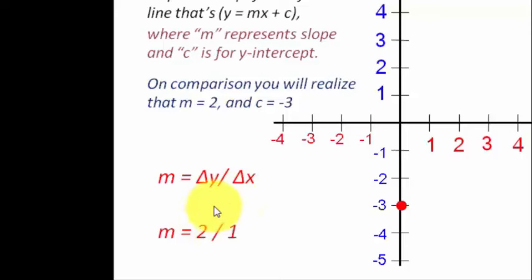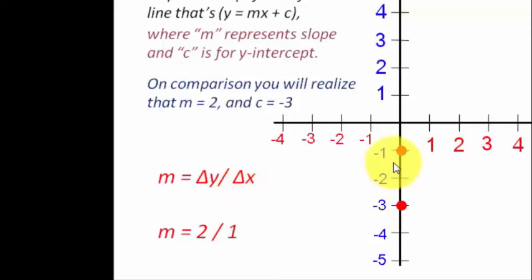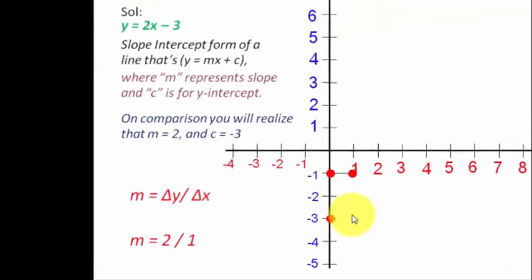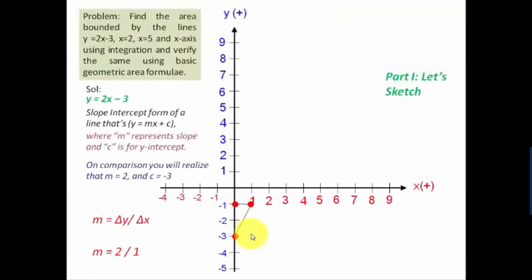From the y-intercept at minus 3, we go two steps upward since the slope is positive 2 — that's 1, 2 — and make a dot. Then delta x equals 1, so we move one unit to the right and make another dot. We join both points and extend the line using a scale. That's the graph of y equals 2x minus 3.